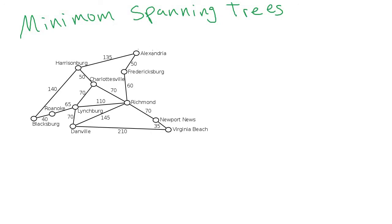Here's our graph of some cities in Virginia with some guesstimates on how far apart they are on different roads. A spanning tree is a tree that touches all of the nodes in the graph — it spans the entire graph. One spanning tree could be Harrisonburg to Blacksburg, Harrisonburg to Alexandria, Harrisonburg to Charlottesville, Charlottesville to Lynchburg, Lynchburg to Roanoke and Danville, Alexandria to Fredericksburg, Fredericksburg to Richmond, and then down from there. These orange edges form a spanning tree — it touches every node.